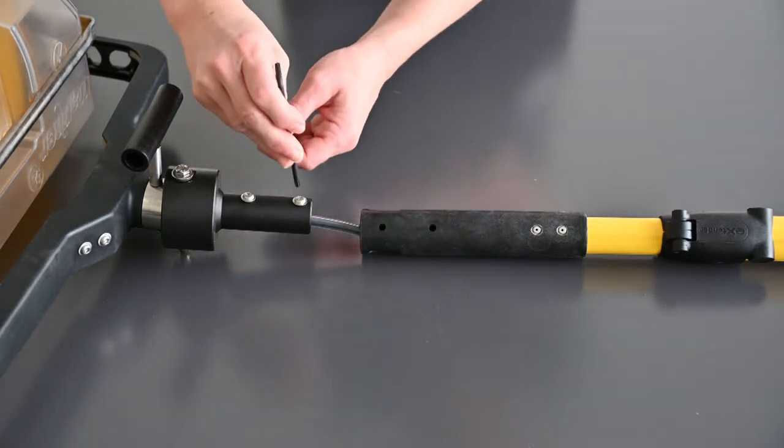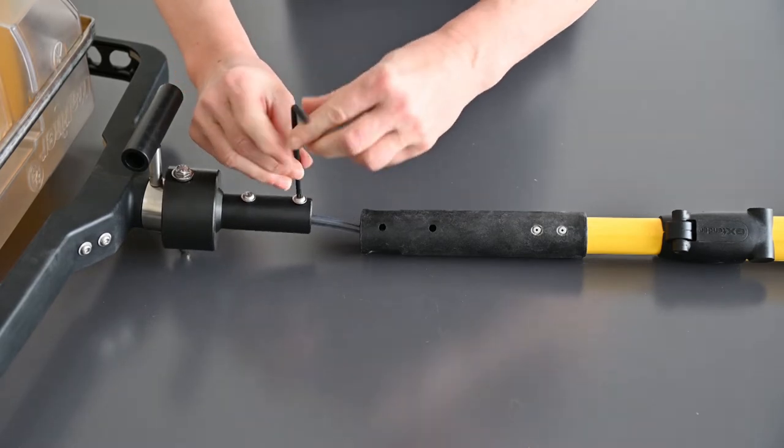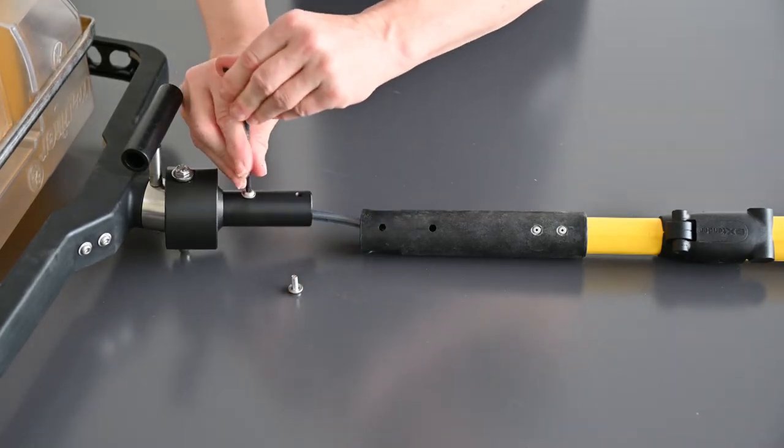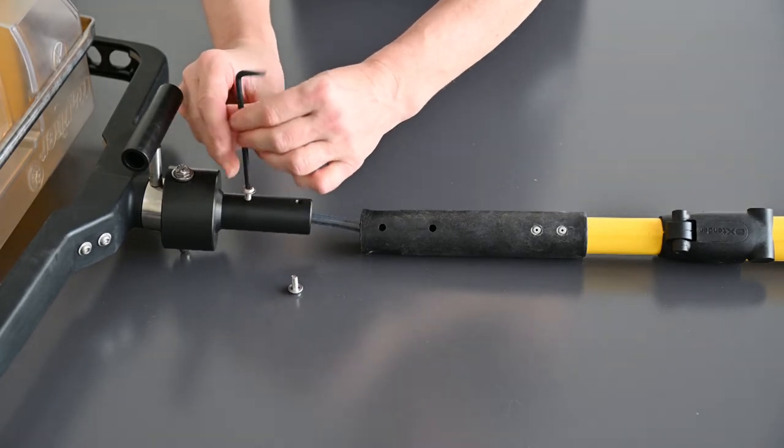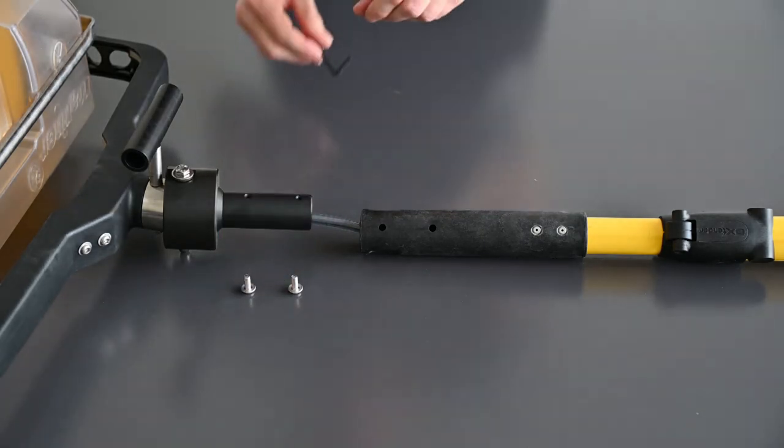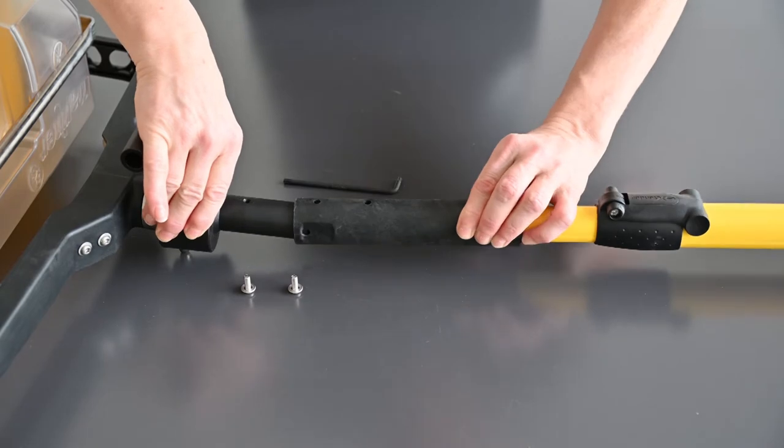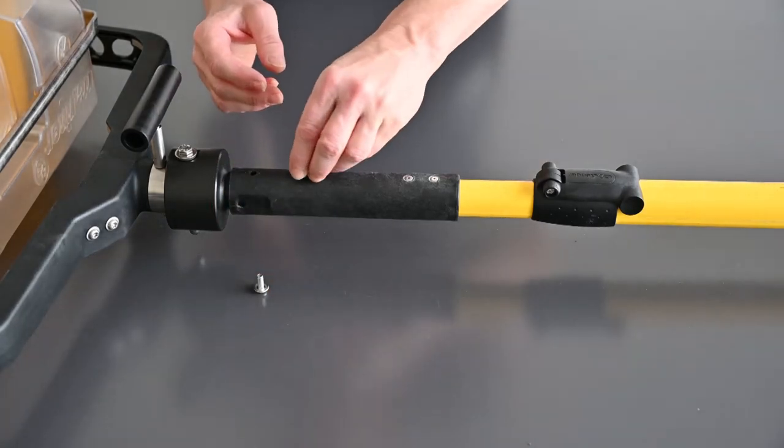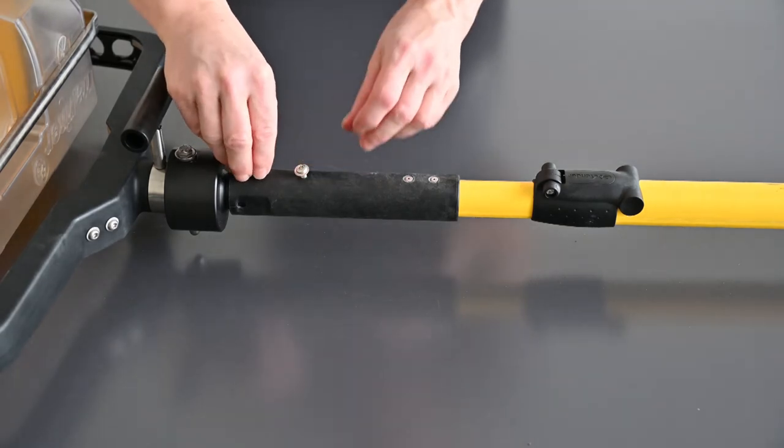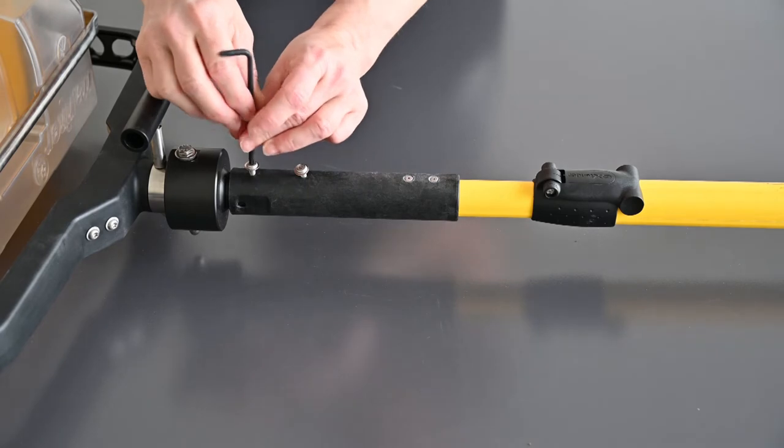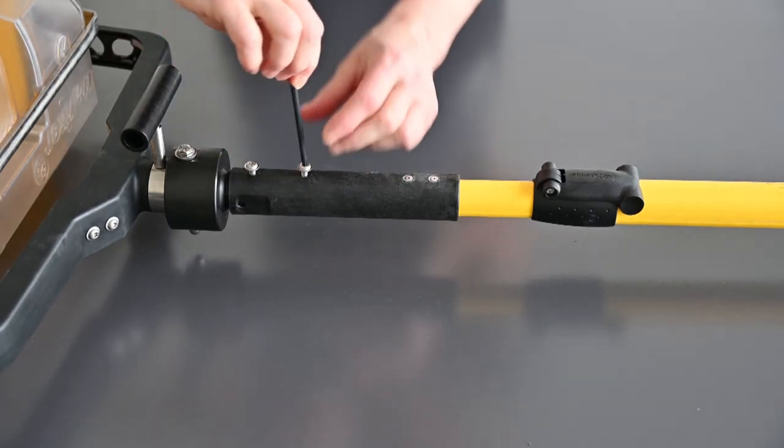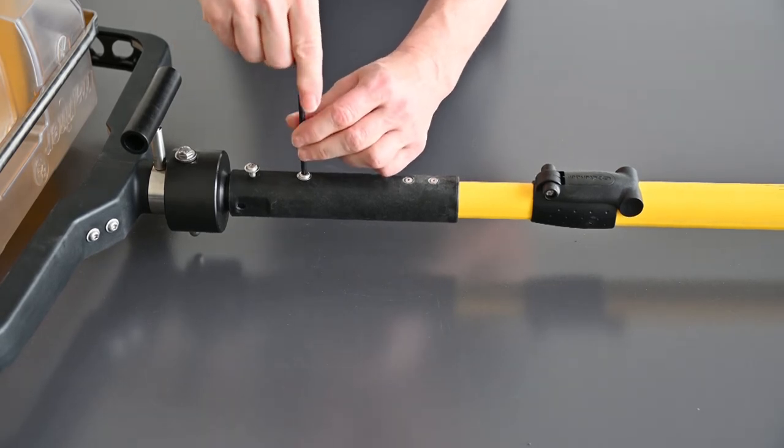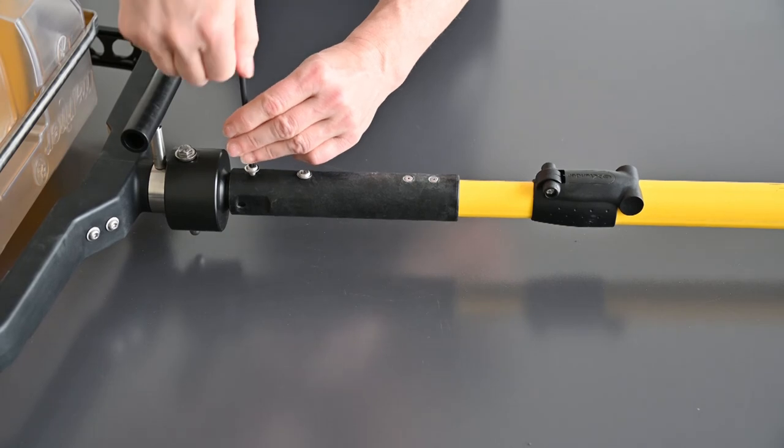Release the two screws on the connecting flange of the mounting bracket. Guide the telescopic rod over the connection flange and position the holes on top of each other. Now fix the pole with the two screws. Only tighten the screws lightly.